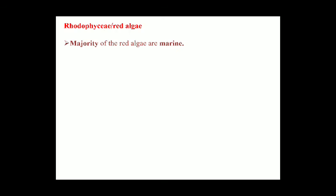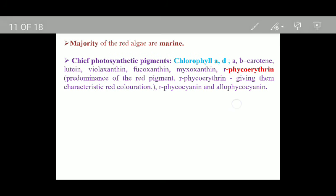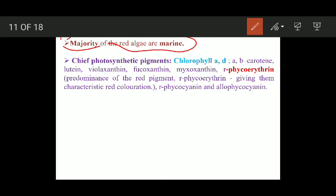The final class is Rhodophyceae or red algae. The majority of red algae are found in marine habitats. Their chief photosynthetic pigments include chlorophyll a and chlorophyll d, along with alpha carotene, beta carotene, lutein, violaxanthin, fucoxanthin, and myxoxanthin.